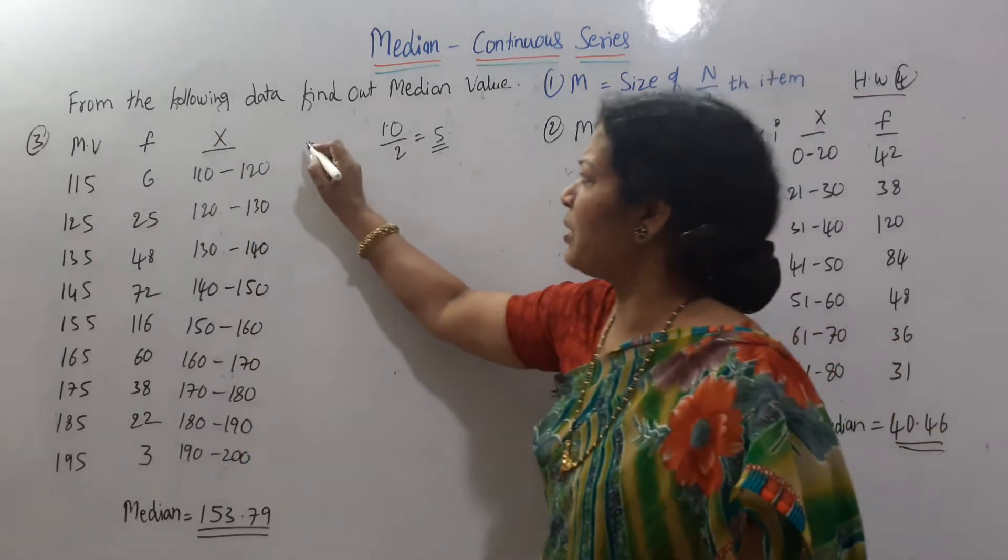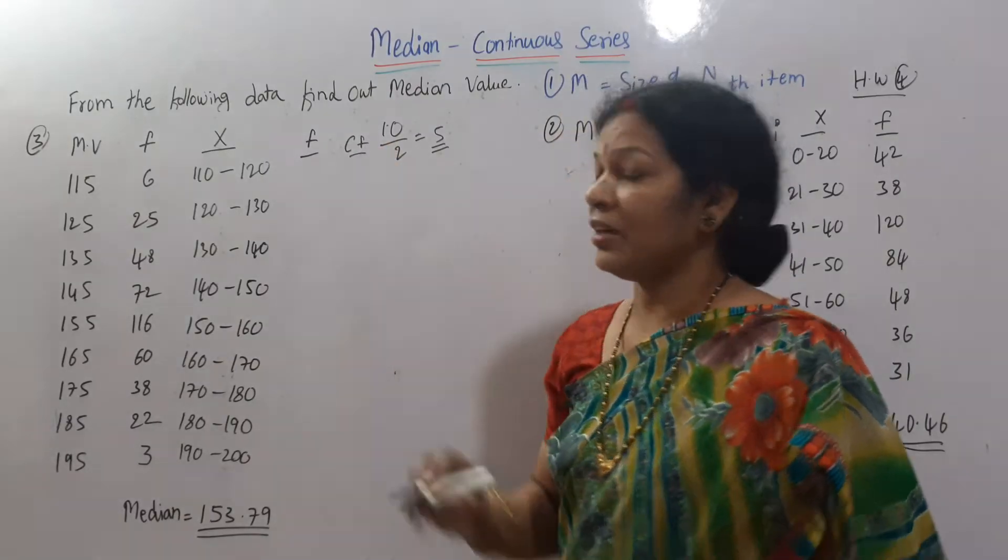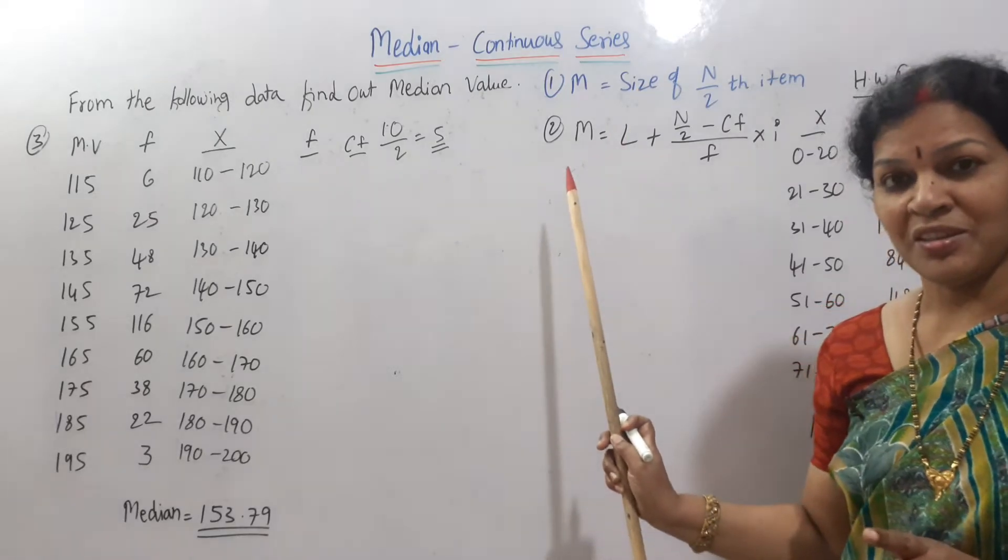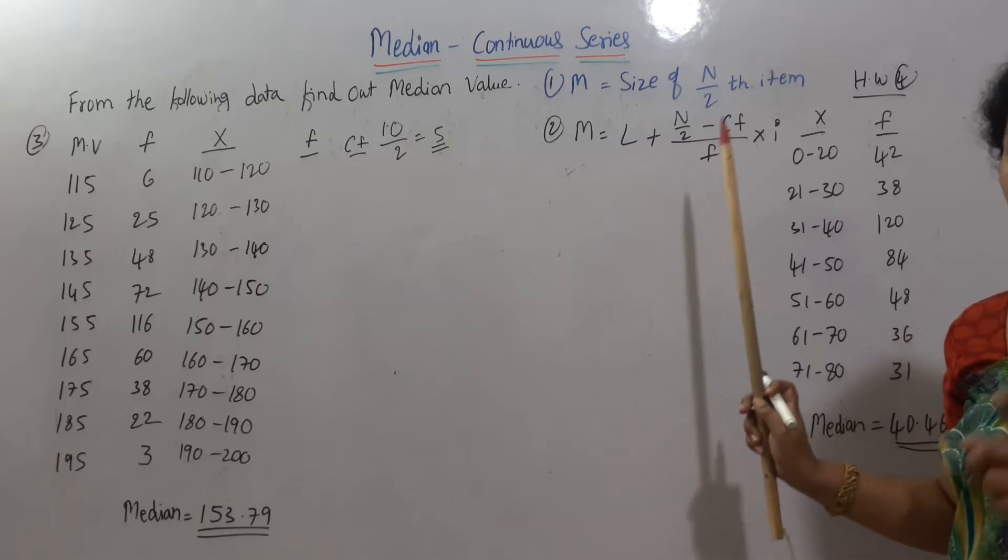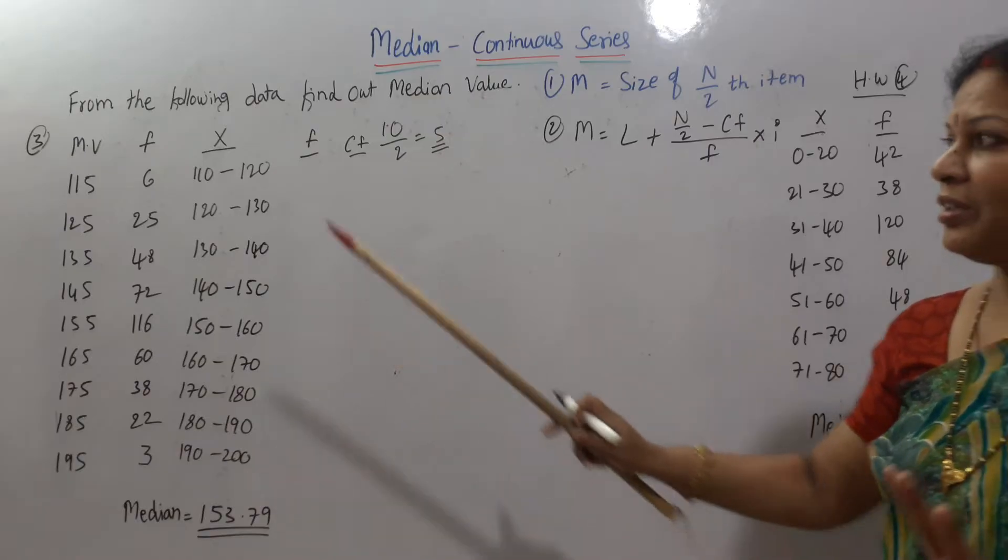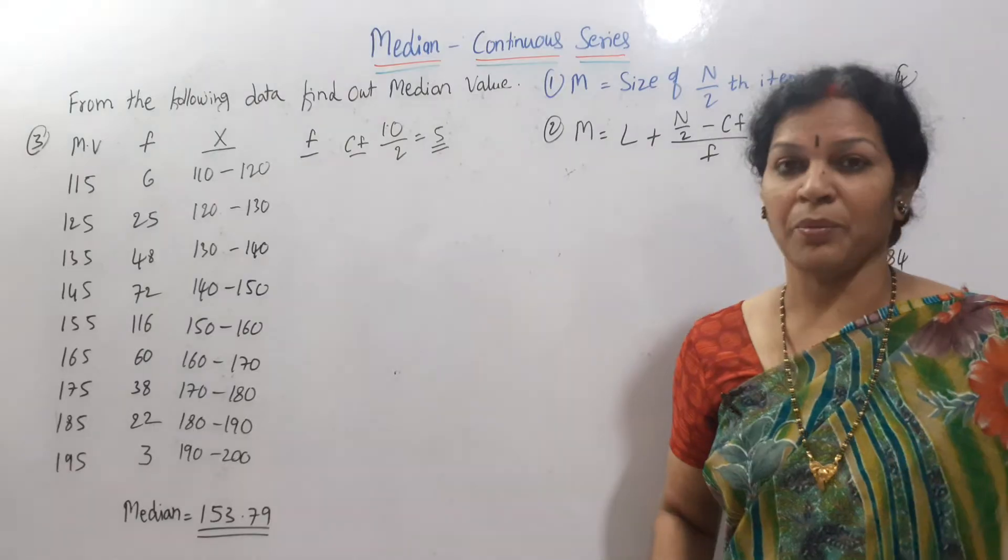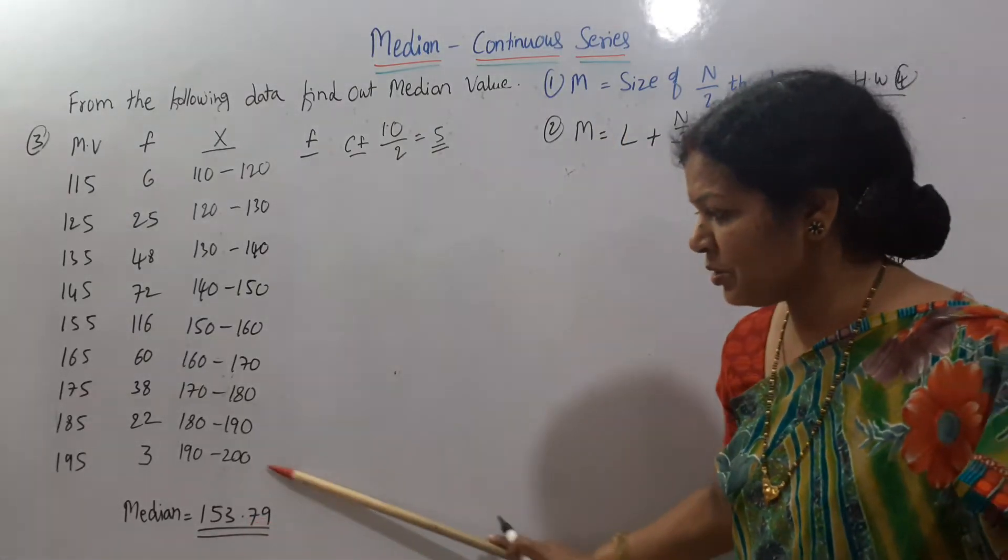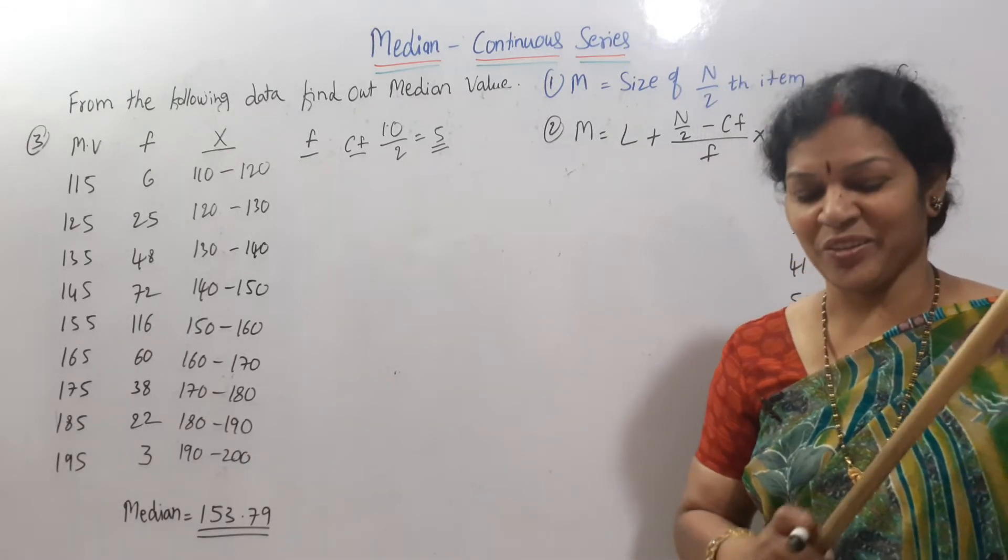Frequency as it is. Once again, you have to write the frequency. Then after that, next step is cumulative frequency. After that, m is equal to size of n by 2 theta. Next, second formula, m is equal to L plus n by 2 minus cf by frequency into i. Rest of the problem you can do it. Only the thing is how to calculate the mid value to x. The answer is 153.79. How many of you are getting?